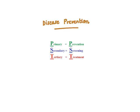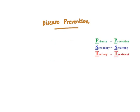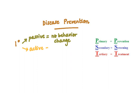Lastly, we'll go through some disease prevention strategies in public health. A quick mnemonic to remember: primary disease prevention is aimed towards prevention of disease, secondary is screening, and tertiary is treatment. Primary prevention can be split into two broad categories: passive, where there is no behavior change on the part of the individual — such as drinking fluoridated water daily — and active, where there is a behavior change, such as receiving an immunization where the individual has to physically go in and get vaccinated.